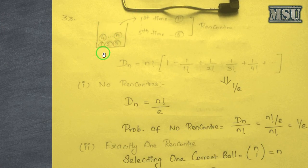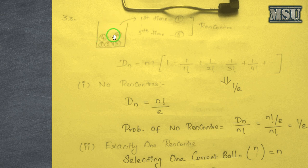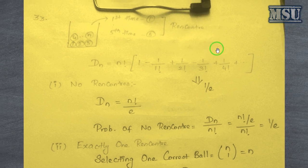We have a container which contains n number of balls. You take the balls one by one. For example, for the first time you take the ball numbered 1, for the fifth time you take the ball numbered 5, for the nth time you take the ball numbered n. If this occurs, we call it a rencontre.